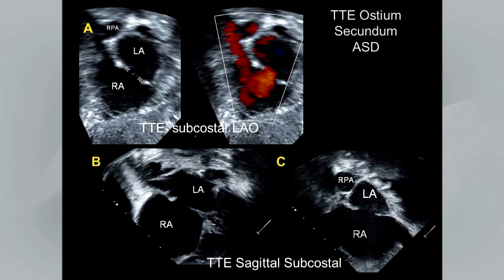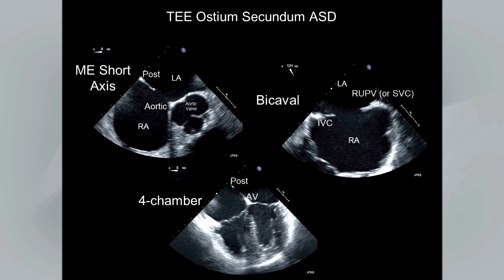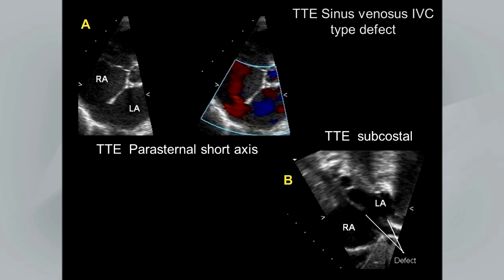Another pediatric patient example in the subcostal LAO and sagittal subcostal views shows a moderate-to-large ostium secundum ASD with left-to-right color Doppler flow. A transesophageal echo example demonstrates key views used to define the rims and the defect: a mid-esophageal short axis view on the upper left, a bicaval view on the right, and a four-chamber view on the bottom. These show the posterior and aortic rims in the short axis, the right upper pulmonary vein and inferior rims in the bicaval view, and the posterior and AV valve rims in the four-chamber view.